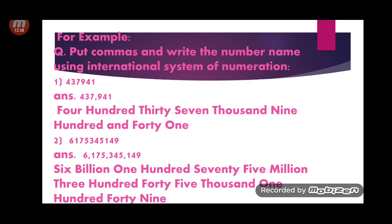Again, in the international system we put commas after every three digits. The periods are: ones, tens, hundreds — then thousands, ten thousands, hundred thousands — then millions, ten millions, hundred millions — then billions, ten billions, hundred billions. To summarize the two examples: four hundred thirty-seven thousand nine hundred and forty-one; and six billion one hundred seventy-five million three hundred forty-five thousand one hundred forty-nine. I hope you have understood naming in both the Indian system and the international system.